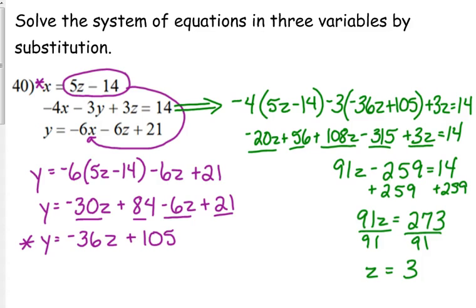That's the biggest part of the battle. Because now, all we have to do is plug 3 into the x and the y. Well, we plug it in for z, but in the x equation and the y equation. So, x equals 5 times 3 minus 14. Well, that's 15 minus 14. So that's 1. Y equals negative 36 times 3 plus 105. So that's negative 108 plus 105. So negative 3.